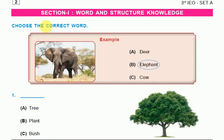Section 1: Word and Structure Knowledge. Choose the correct word. Example: This is the elephant. So here are three options: deer, elephant, cow. Which is correct? You have to say. The correct answer is elephant. Next question: tree, plant, or bush. The correct answer is tree.